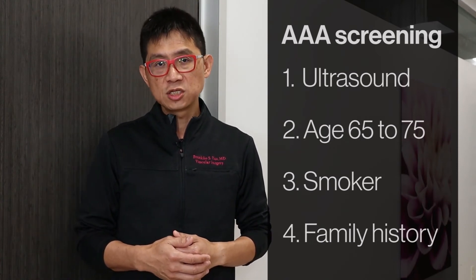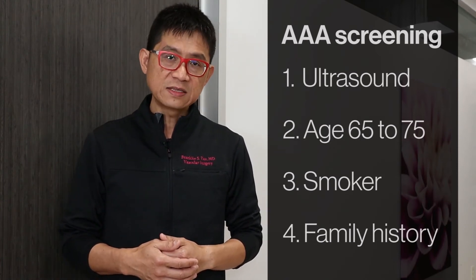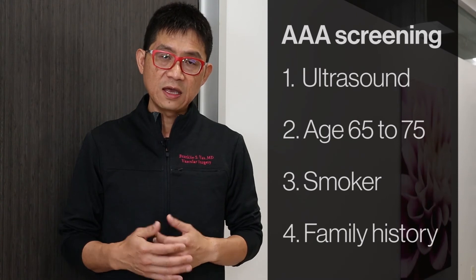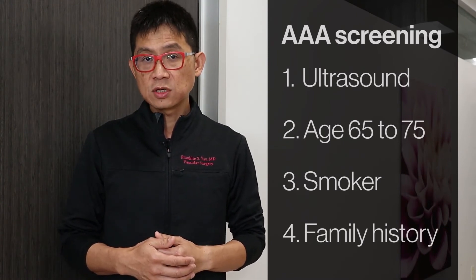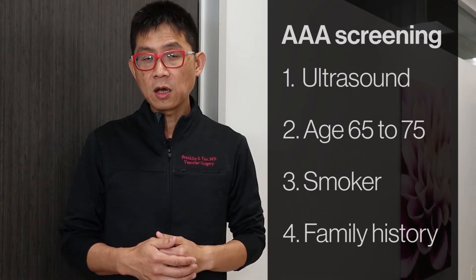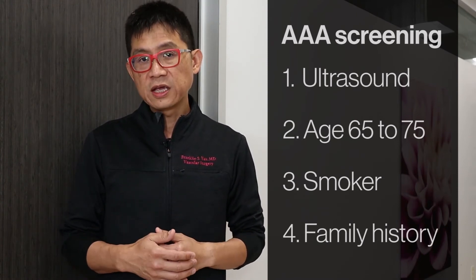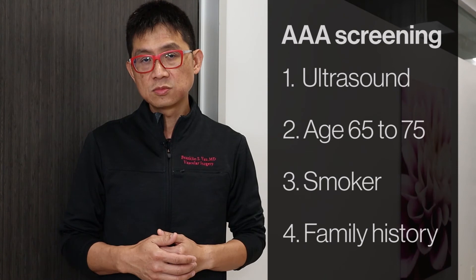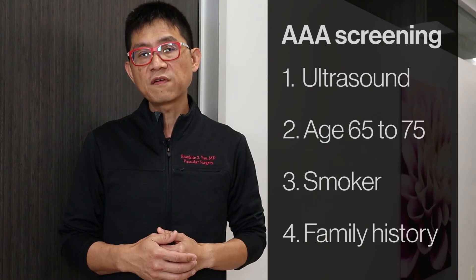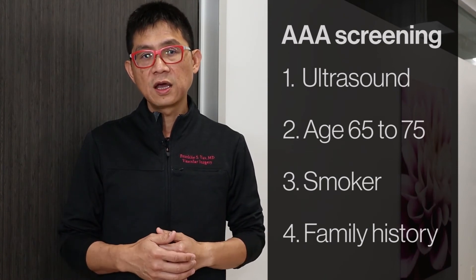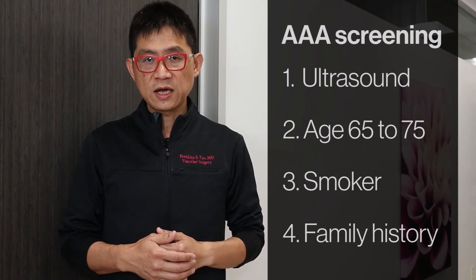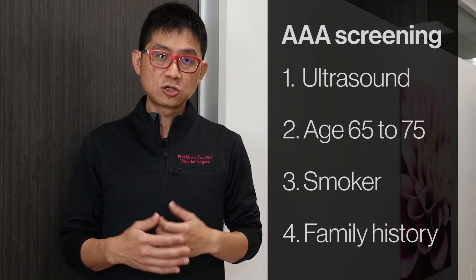If you are between the ages of 65 and 75 and you have either a history of smoking or a family history of aneurysms, you qualify for a Medicare-covered aortic ultrasound examination to screen for an aneurysm.